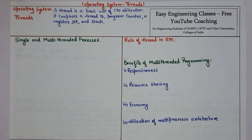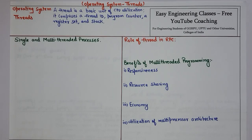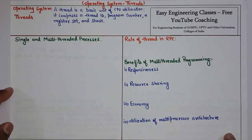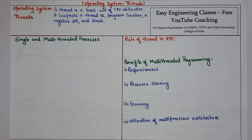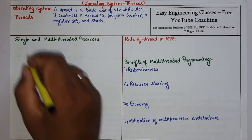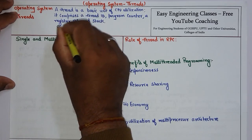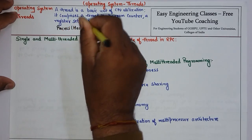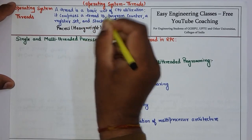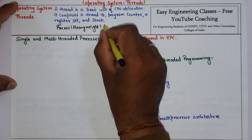In this video we are going to discuss the topic of threads in operating system. If you have studied Java, then in Java we have multithreading and the same advantages of threads are also applicable here. A thread is a basic unit of CPU utilization that comprises a thread ID, program counter, register set, and stack. Typically, a process is heavy weight and threads are light weight — processes consume a lot more resources compared to a thread.